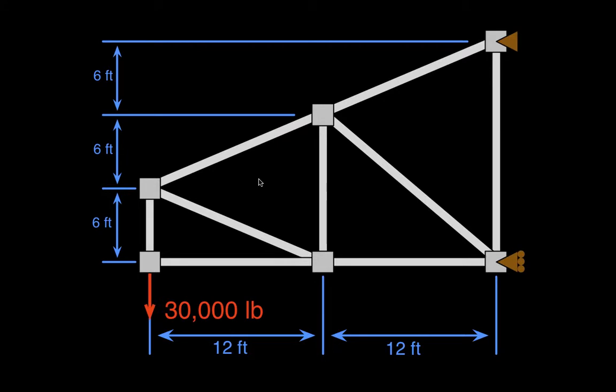So to begin with, we're going to label all of the junctions so that we can keep track of things. So we'll call this A, B, C, D, E, and F.